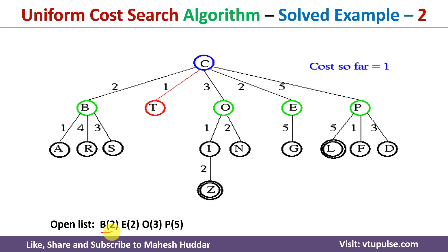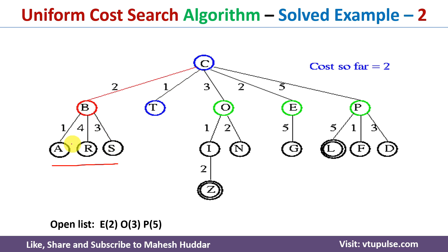The next possibility is B2. B is the next node; we remove it from the open list and explore B. There are three possible paths: A, R, and S. To reach A, the total cost is 3. To reach R, the total cost is 2 plus 4, which equals 6, and so on.